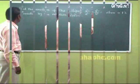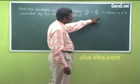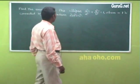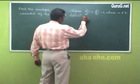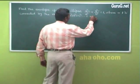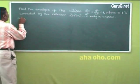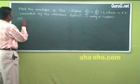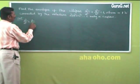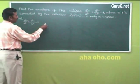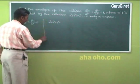Next problem: find the envelope of the ellipse x²/a² + y²/b² = 1, where a and b are connected by the relation a² + b² = c², c being a constant. This is a two-parameter problem. The ellipse equation and the constraint equation a² + b² = c² are given.